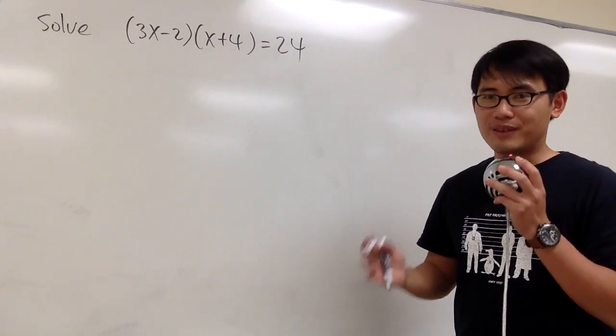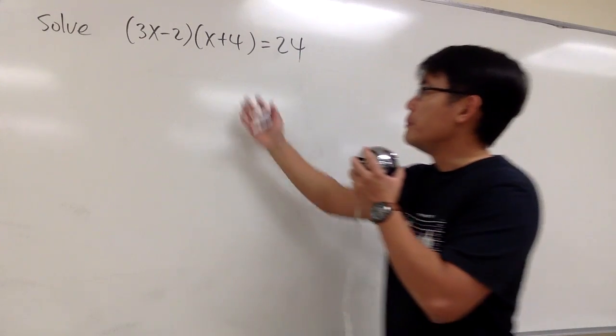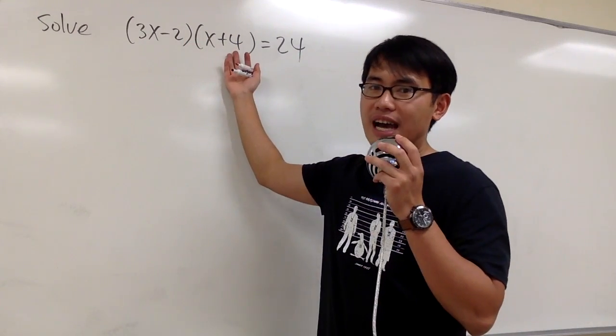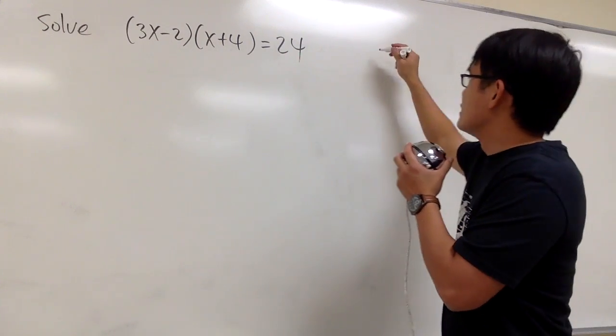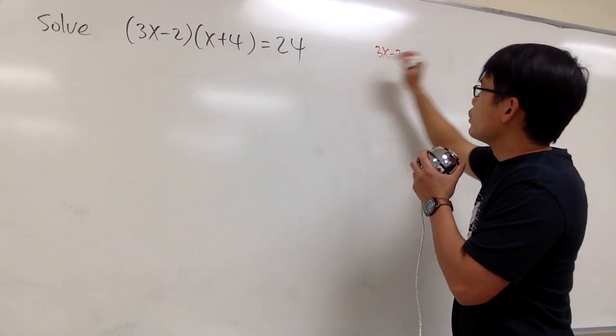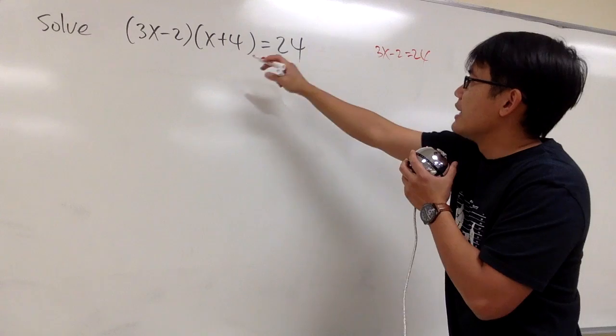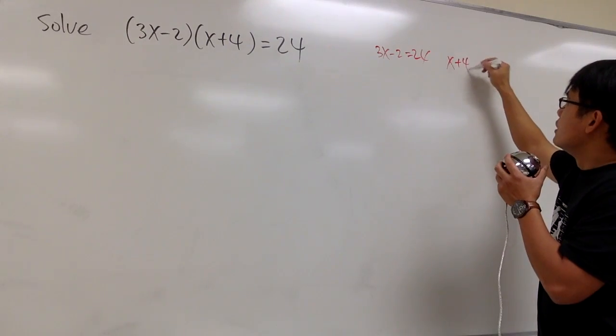Let me show you what's wrong first. Don't get too excited, because we see we have two factors on the left-hand side, but don't just say I'm going to set this equal to that, and then say 3x minus 2 is equal to 24, and then x plus 4 is equal to 24.